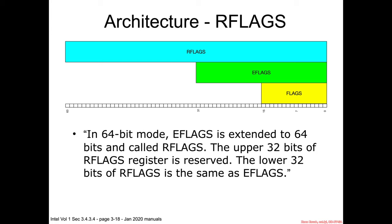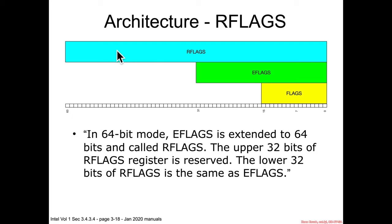Thus far we've only talked about Intel general purpose registers. Now we're going to introduce a new special purpose register: the rflags register. The manual says in 64-bit mode eflags is extended to 64 bits and called rflags. The upper 32 bits of the rflags register is reserved and the lower 32 bits is eflags. Basically this is saying: we've extended the register but we're not actually using it for anything — you can mostly just think about it as the eflags register from 32-bit assembly.